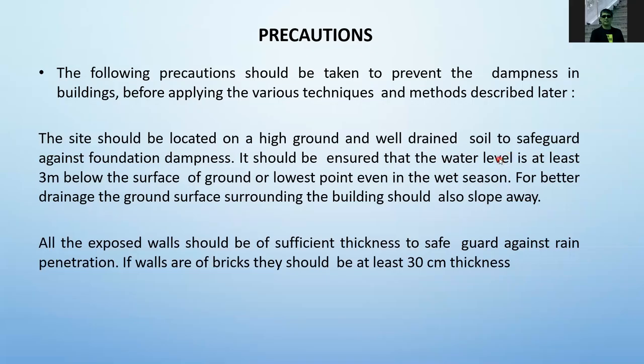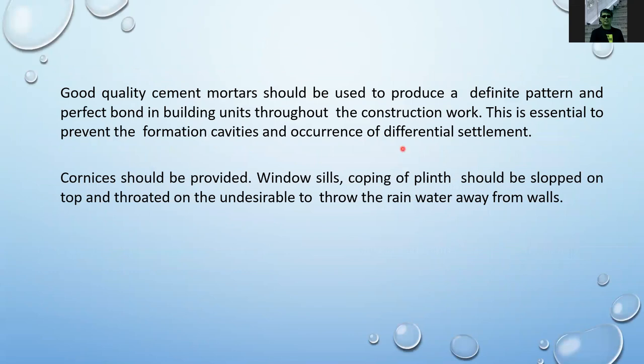All exposed walls should be of sufficient thickness to safeguard against rain penetration — if walls are brick, they should be at least 30 centimeters thick. Good quality cement mortar should be used to produce a definite pattern and perfect bond throughout the construction. Corners should be provided on windowsills and copings on the plinth, sloped on top to throw rainwater away from walls.